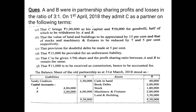Point E: C is to be given one-fifth share, and the profit sharing ratio between A and B will remain the same — that is 3:1. The balance sheet of the old partnership as at 31st March 2018 is now read.